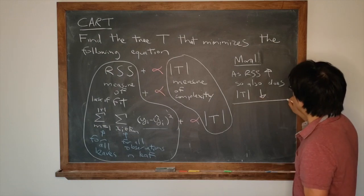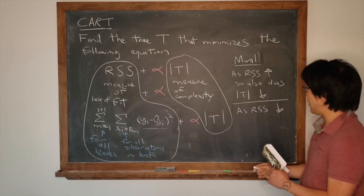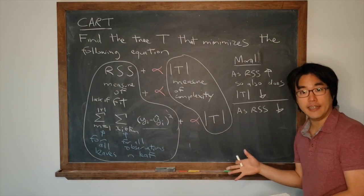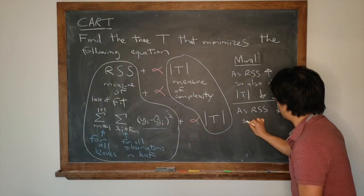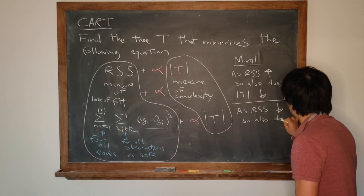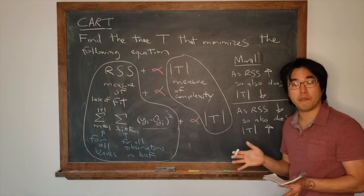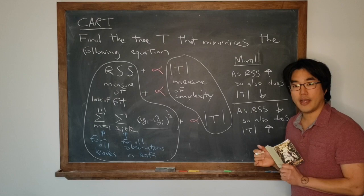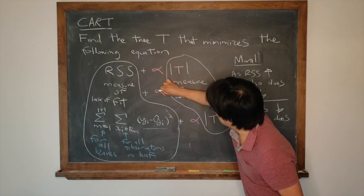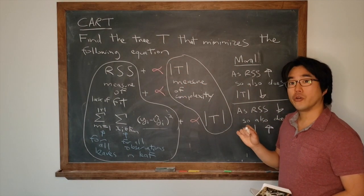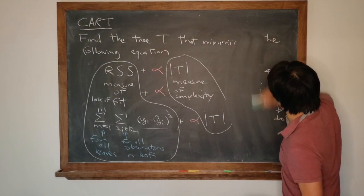As the fit gets worse, it's probably because the tree is just less complex. But also, as RSS goes down, meaning as your tree better fits the data, it necessarily has to be more complex. And what is it that sets the balance between these two? Alpha. Let's keep that idea in mind, because Lasso works the same way.